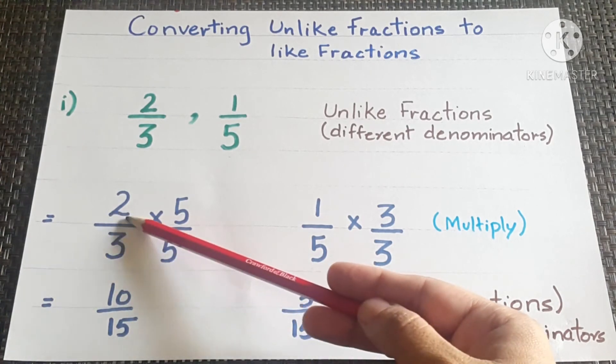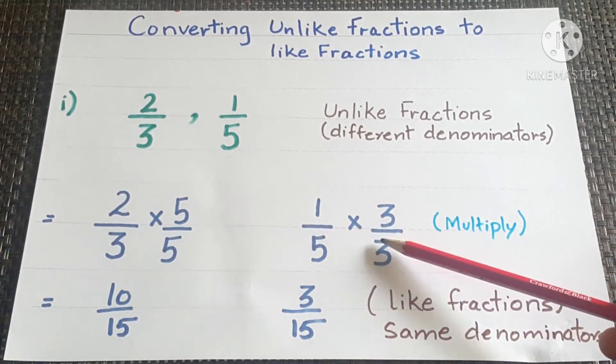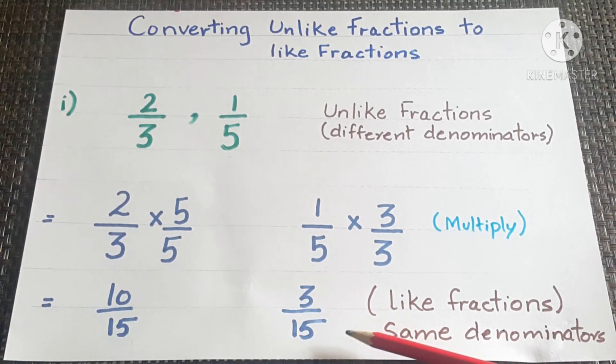Multiplying this fraction with 5 and this fraction with 3, we get the fractions converted into like fractions.